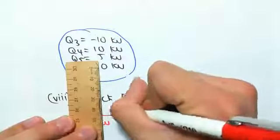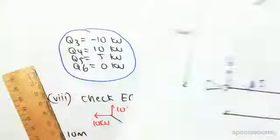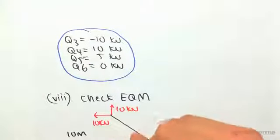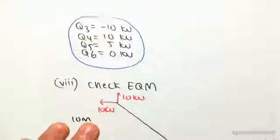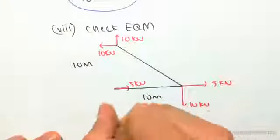Now q5 and 6, so 5 is going across there, 6 going up. 5 is 5 kilonewtons here and q6 is 0, so there's nothing happening there. All right, so I just go and fill in all the forces, and we're going to check force in the x and y and moment equilibrium.